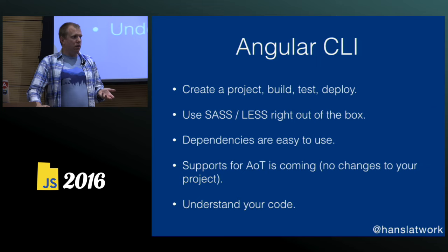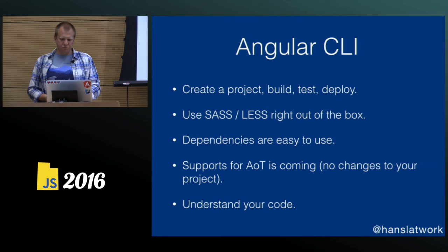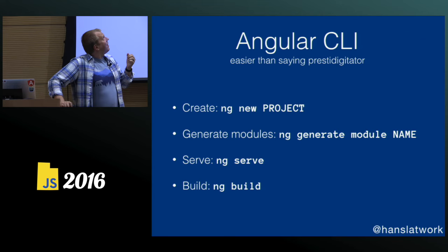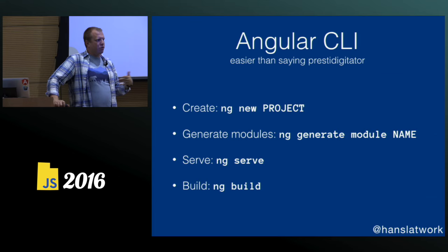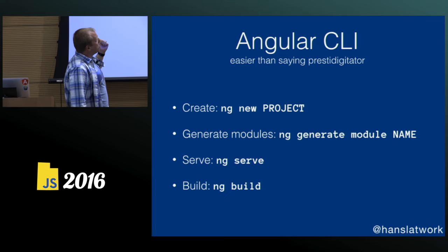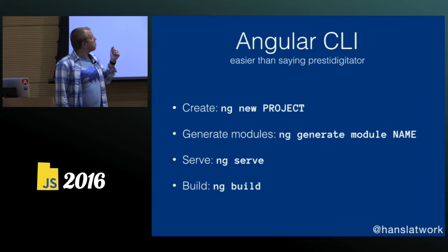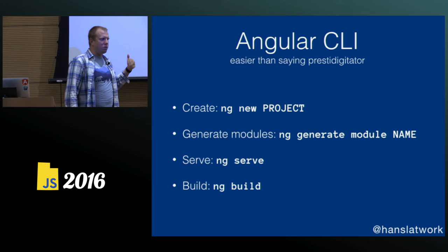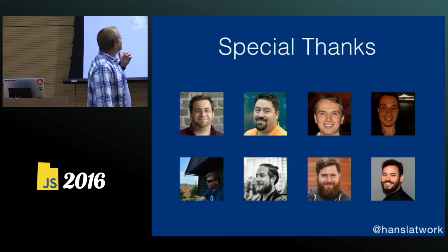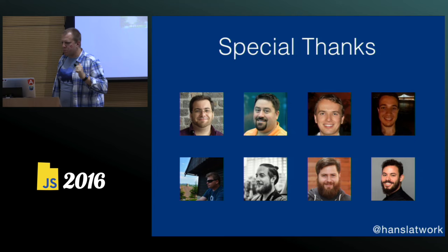So how do you start with the CLI? It's kind of simple. You run ng new project, or create a new directory and run ng init in it. You can ng generate module with a name to create a module, or ng generate component, services, pipes. Then you can serve it locally, build it to deploy it, or build it with --prod to deploy the production version. Special thanks to the awesome team of developers that have been participating in the CLI.